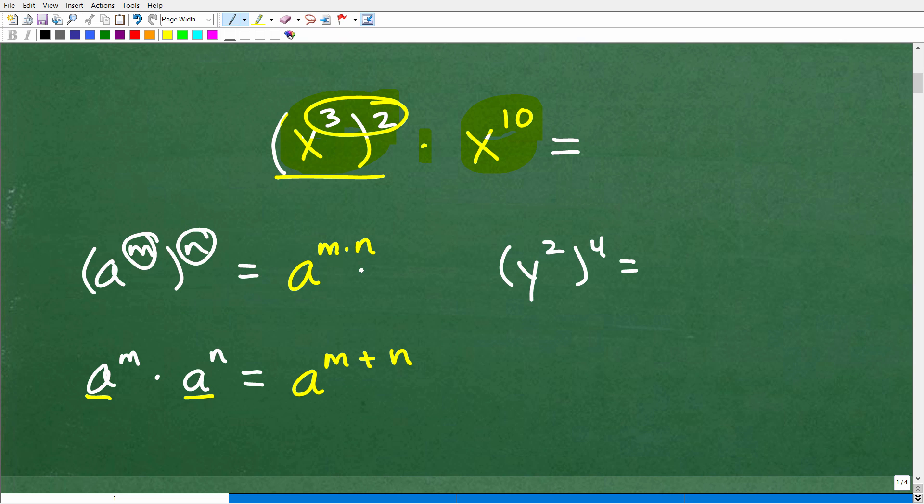Let's say I had y squared to the fourth power. What does the rule say? Well, I have an outside exponent and inside exponent. Just simply distribute or multiply. So this would be y to the eighth power.